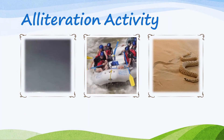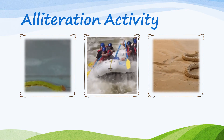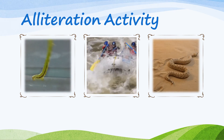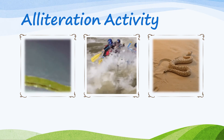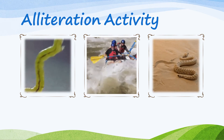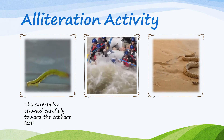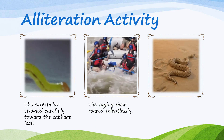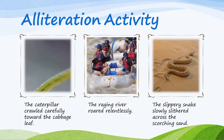Take a crack at this activity. Three pictures have been provided to spark your creativity: a caterpillar, river, and a snake. Using alliteration, write a sentence for each picture. Remember, think about the sound you want to be repeated. Pause the video, record your answers, and press play when you're done. Here are the examples I came up with: The caterpillar crawled carefully toward the cabbage leaf. The raging river roared relentlessly. The slippery snake slowly slithered across the scorching sand.